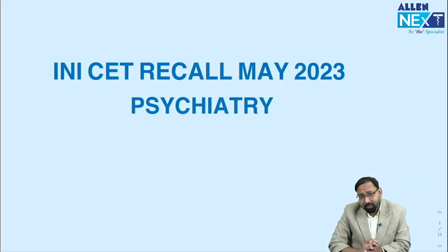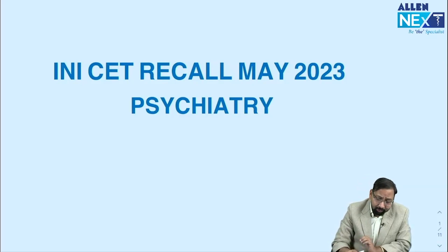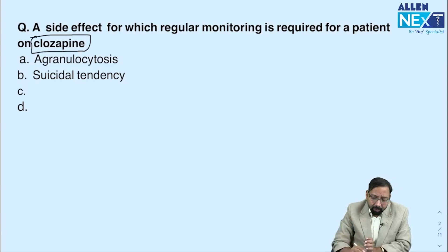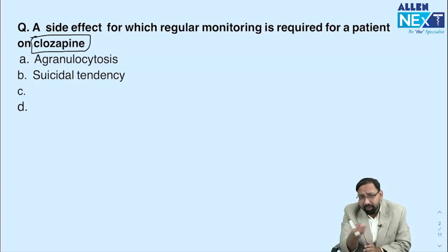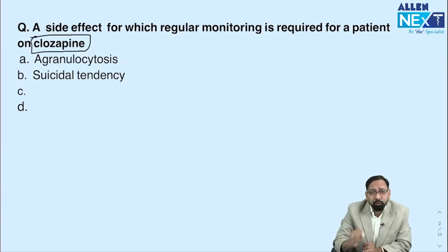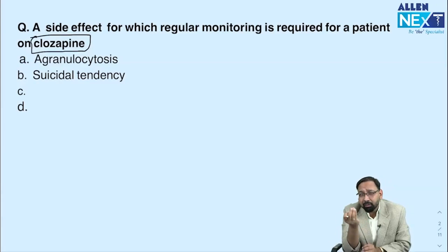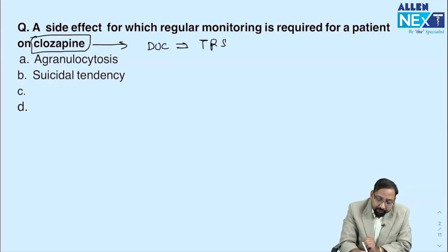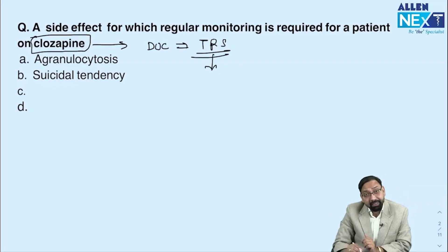We are going to discuss psychiatry goal questions, starting with question number one. This is a repeatedly asked topic: clozapine. In 2023, the same question was asked in a slightly different way — a patient is taking two antipsychotics for four to six weeks with no benefit. Which drug will you give? Clozapine is the drug of choice for treatment-resistant schizophrenia.